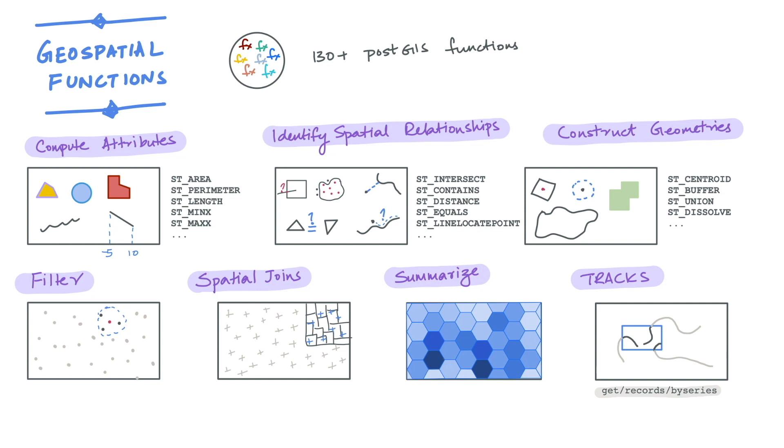A common use case for this would be to return data on a track based on a user interaction on a map, like clicking on a particular track on a dashboard app. Note that get records by series endpoint only returns the data. It does not update the view itself.